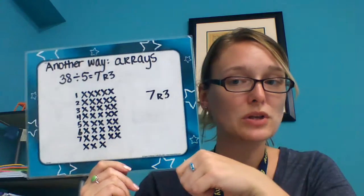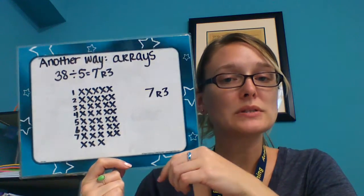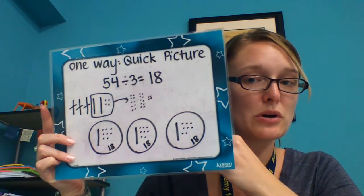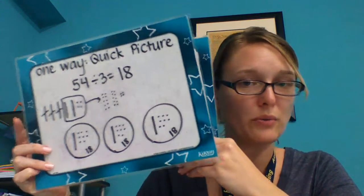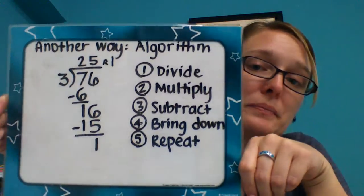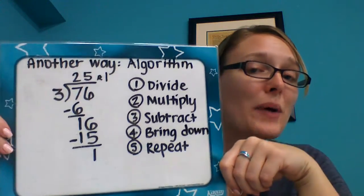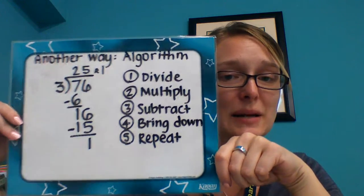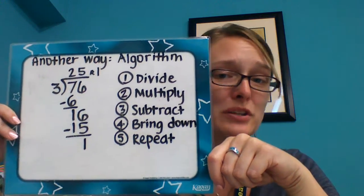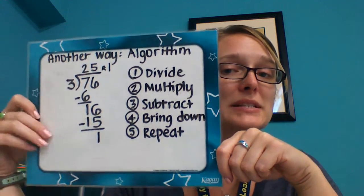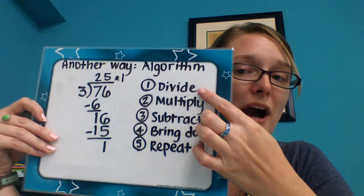So that's another way you can solve it. For some of us it might be simpler than doing a quick picture and having to do all the regrouping. Another way we can solve is by using the algorithm. We could even use it combined with quick pics or arrays to make sure we're getting the steps right along the way, especially because quick pictures will show you when you're regrouping. The basic steps of the algorithm are: divide, multiply, subtract, bring down, repeat.